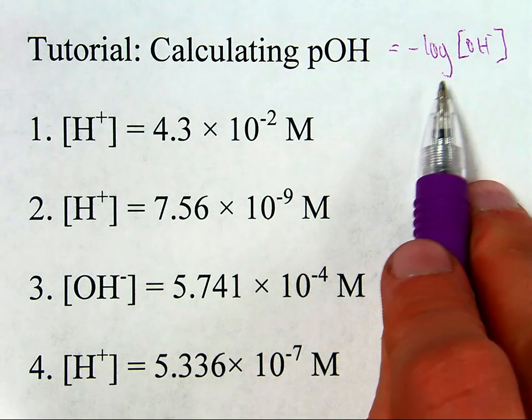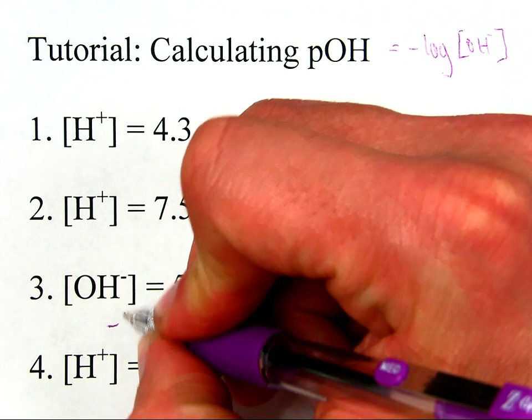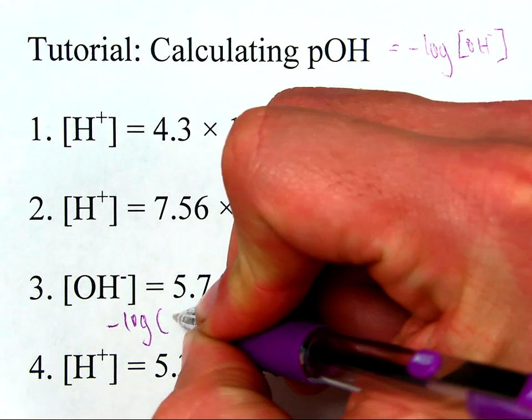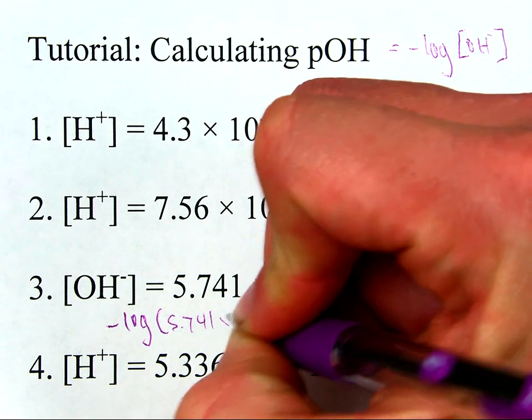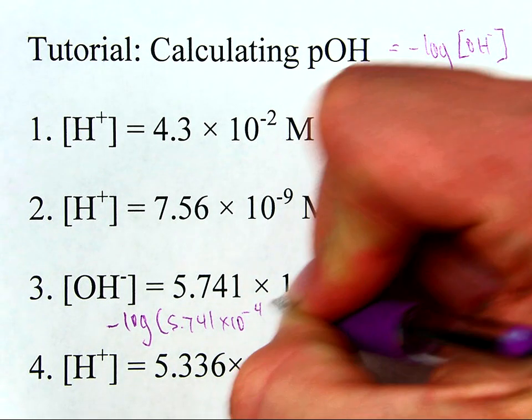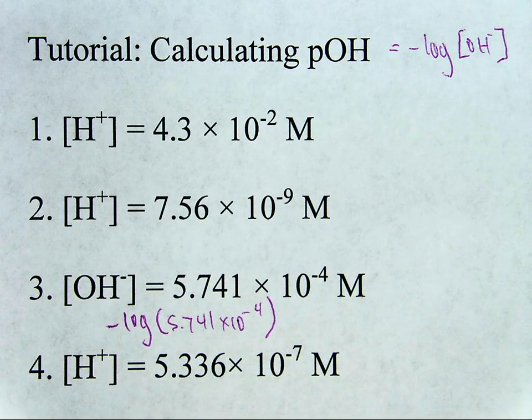So, with this in mind, if I want to find the pOH, it's simply the negative log of 5.741 times 10 to the negative fourth, which is the hydroxide concentration in this example.